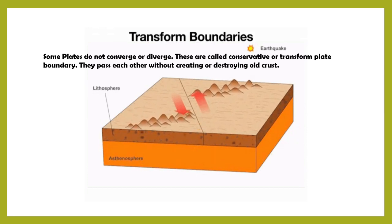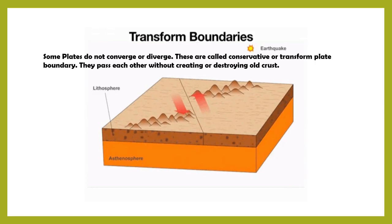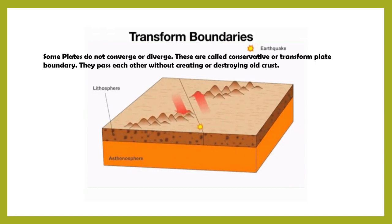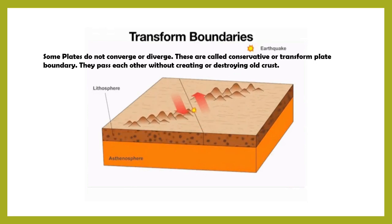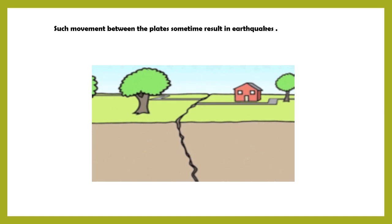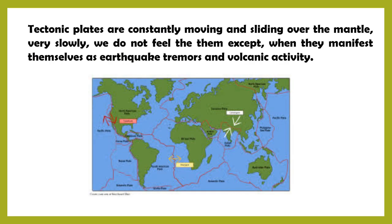The third type is transform boundaries. Some plates do not converge or diverge — these are called conservative or transform plate boundaries. The plates pass each other without creating or destroying old crust. Such movement between the plates sometimes results in earthquakes.